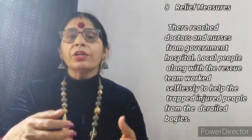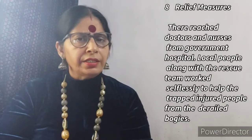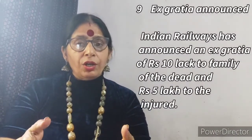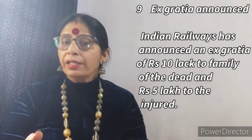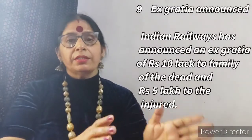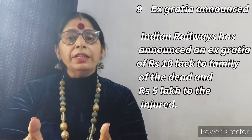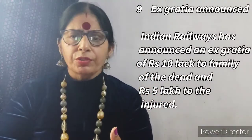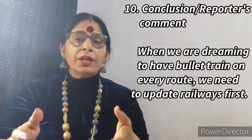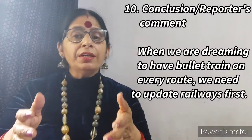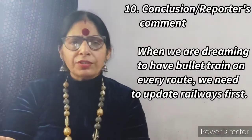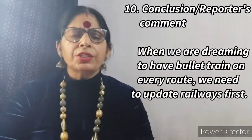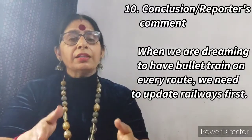The ninth value point is exgratia. For example: 'Indian Railways has announced an exgratia of rupees 10 lakh to the family of the dead and rupees 5 lakh to the injured.' You write Indian Railways or Indian Government depending on the question. The tenth and final point is the conclusion — the reporter's comment. For example: 'When we are dreaming of having bullet trains on every route, we need to update the railways first.' You can also give suggestions or any other conclusion.